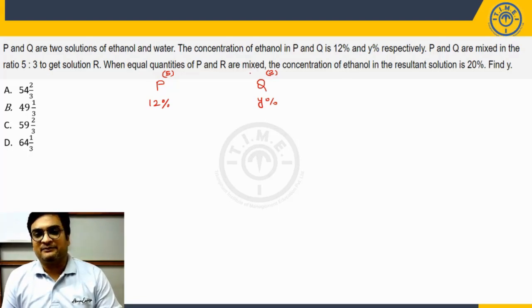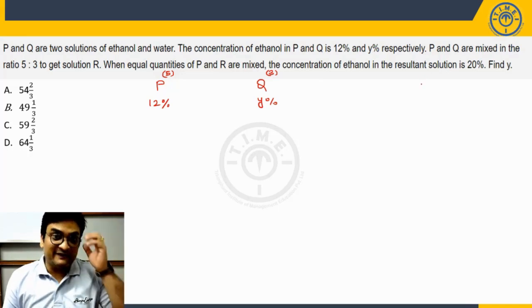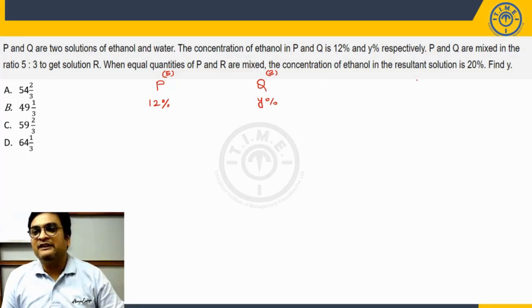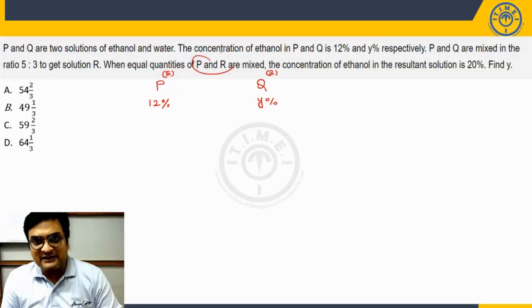When equal quantities of P and R are mixed, the concentration of ethanol in the resultant solution is 20%. Find Y is asking. P and Q are mixed in the ratio 5 to 3 to get solution R. When equal quantities of P and R are mixed, the concentration of ethanol in the resultant solution is 20%. Here we are mixing P and R now.